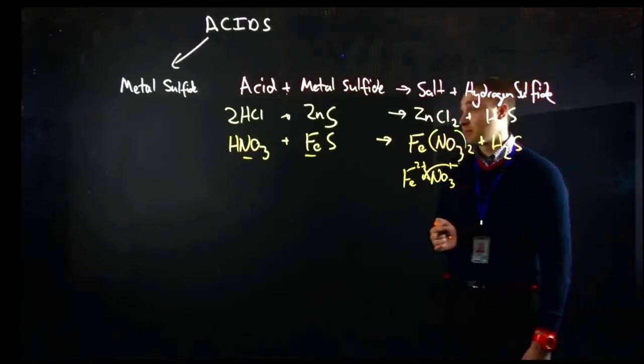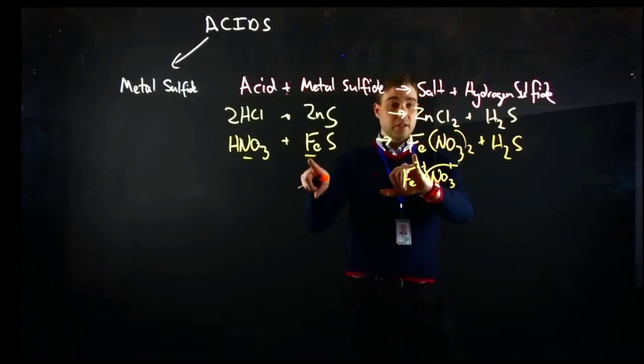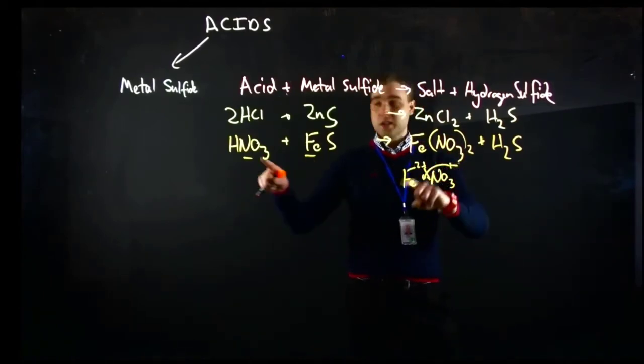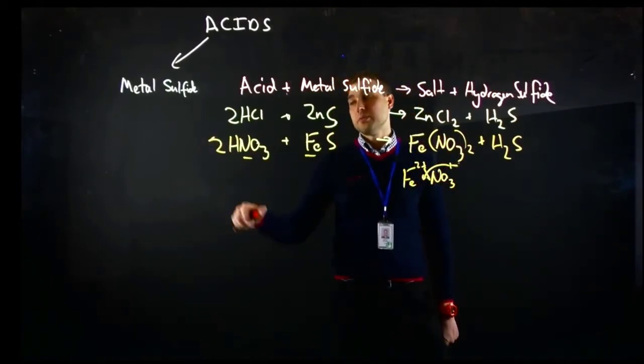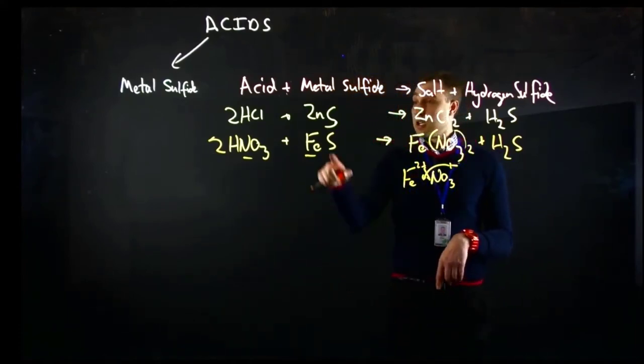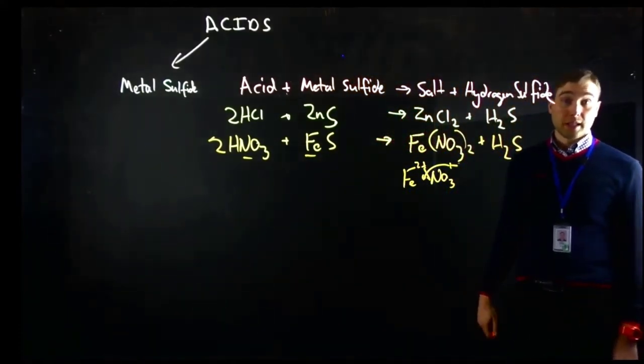Let's check for balancing. 1 Fe, 1 Fe, so 1 iron, 1 iron. 2 nitrates, only 1 nitrate, so we need to double that one. 2 hydrogens, 2 hydrogens, 1 sulfur, 1 sulfur. So I think we're balanced now.